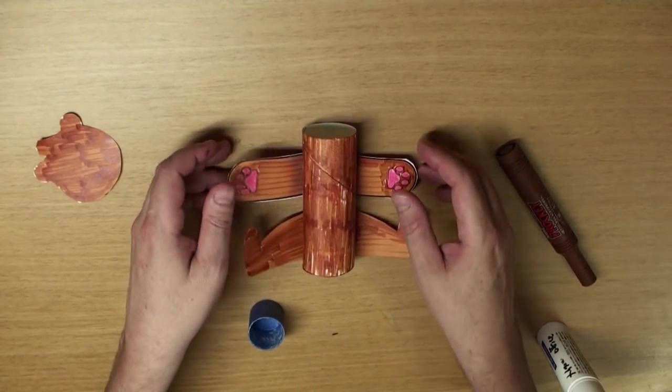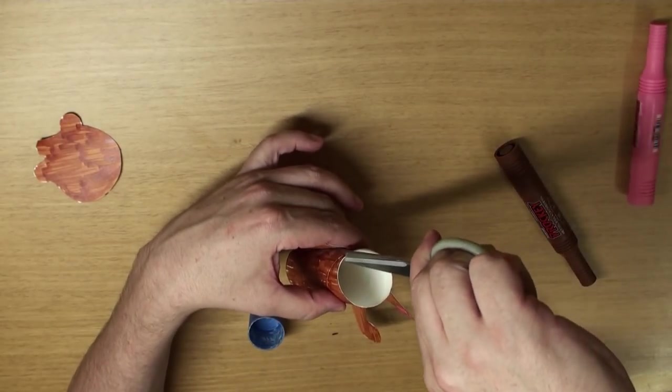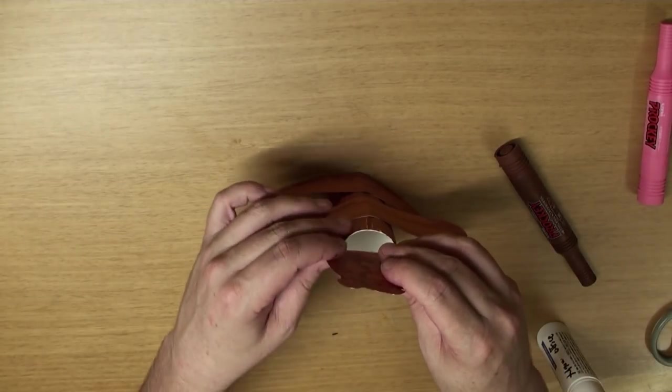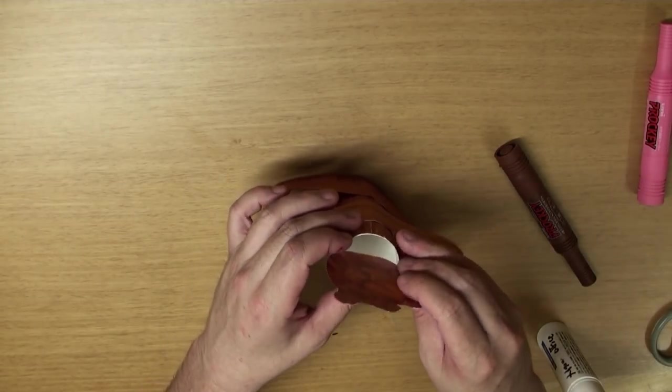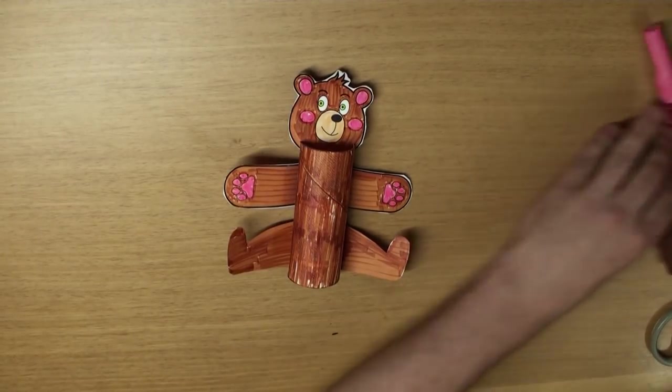Great! Now for his head, we're going to grab some scissors and make two small cuts. One like this and one like this. Great! And we can slip his head in like this. And we're all done! Wow! He looks great!